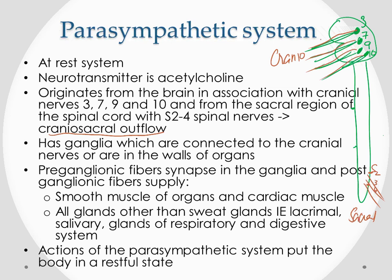Since parasympathetic is autonomic, it also has preganglionic and postganglionic neurons, with ganglia either connected to the cranial nerves or within the walls of the organs. Postganglionic fibers supply smooth muscle of organs, cardiac muscle, and most glands — lacrimal gland, salivary glands, glands of the respiratory and digestive systems. These glands act when you're at rest: salivary glands when digesting, gastrointestinal glands when at rest. The diagram shows origin with cranial nerves 3, 7, 9, and 10, plus sacral segments S2–S4, with ganglia near cranial nerves or within organ walls.